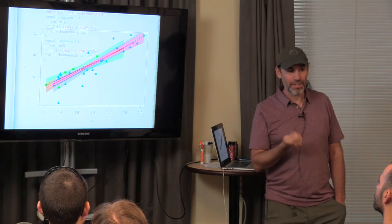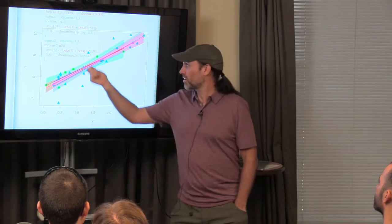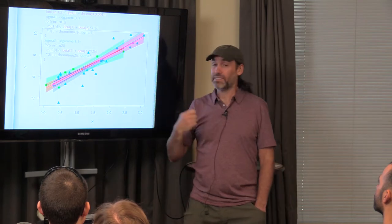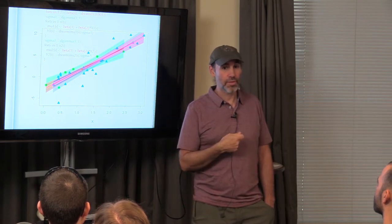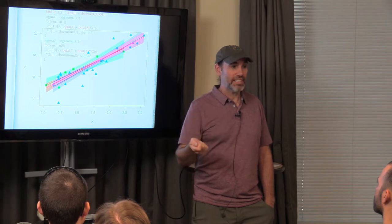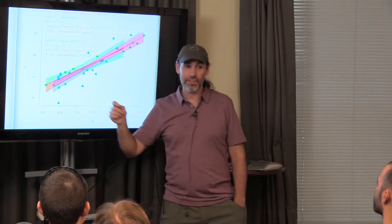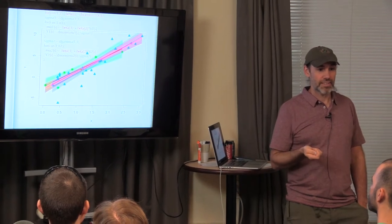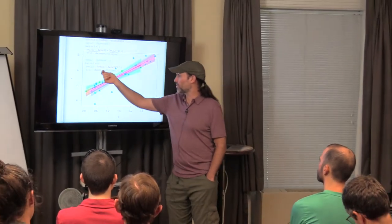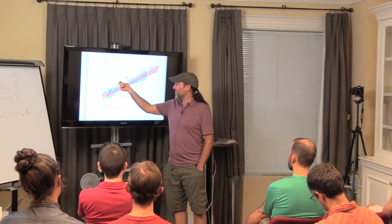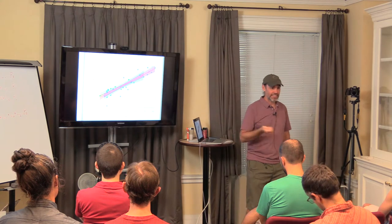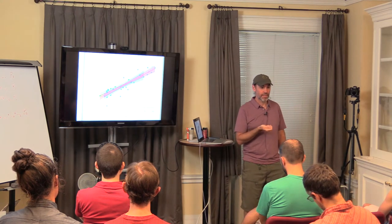If the two types of observations aren't measuring exactly the same thing, your observation models might be more complicated. For example, if you take one type as truth, you might need an observation model on the other that involves some calibration process for it being a proxy — a linear model relating the latent state to a proxy variable. That's completely valid to do.